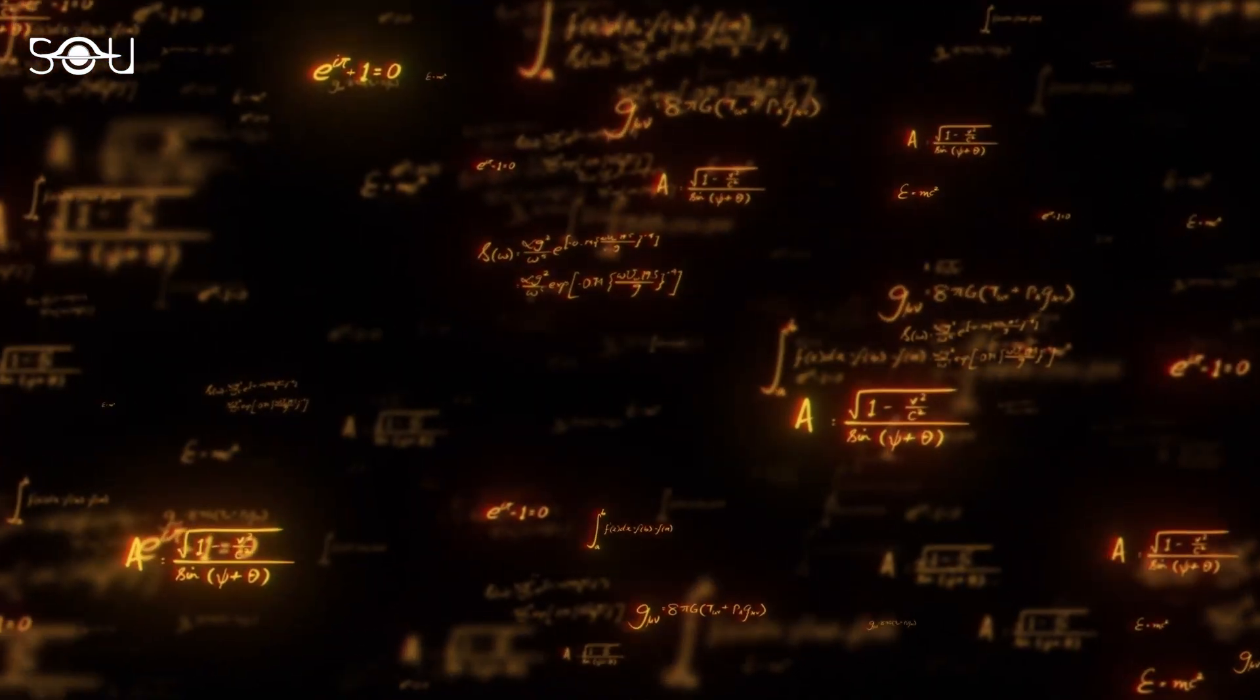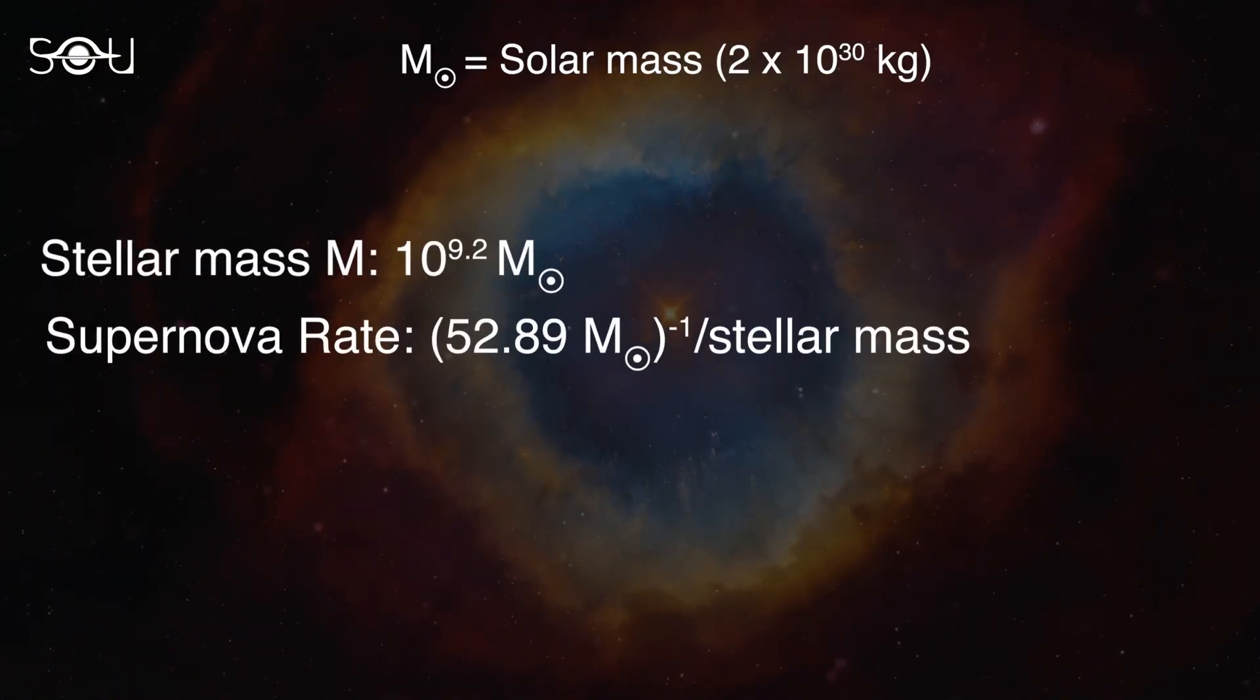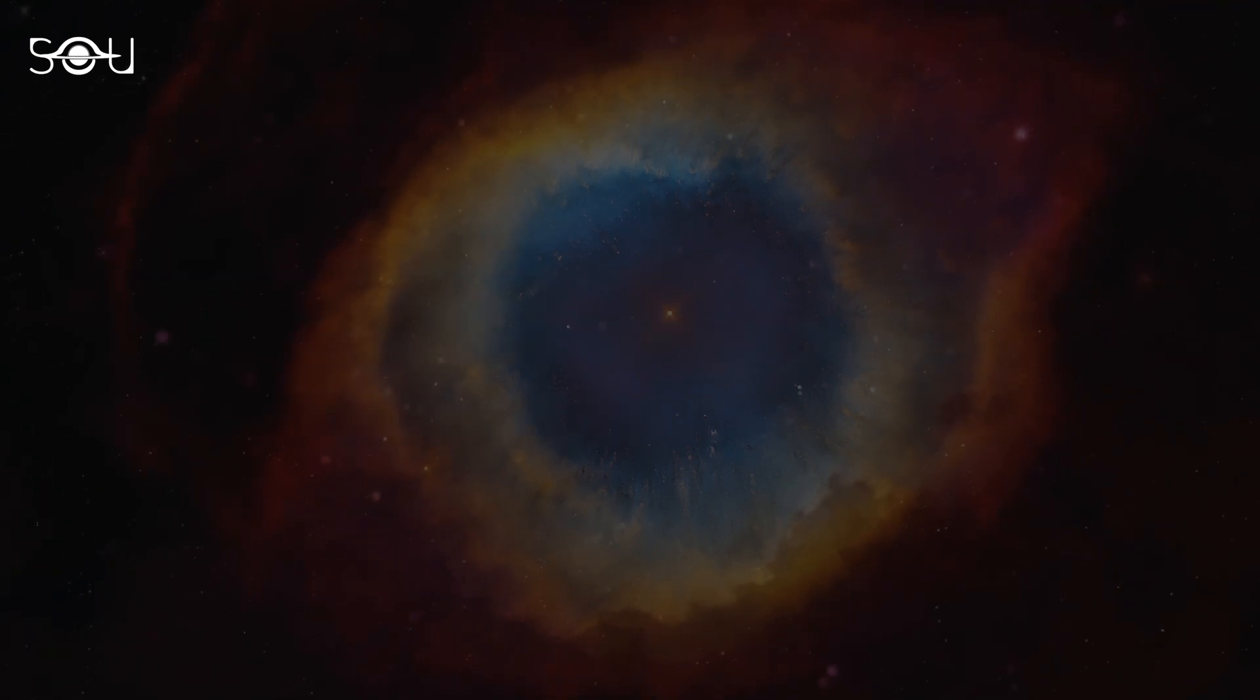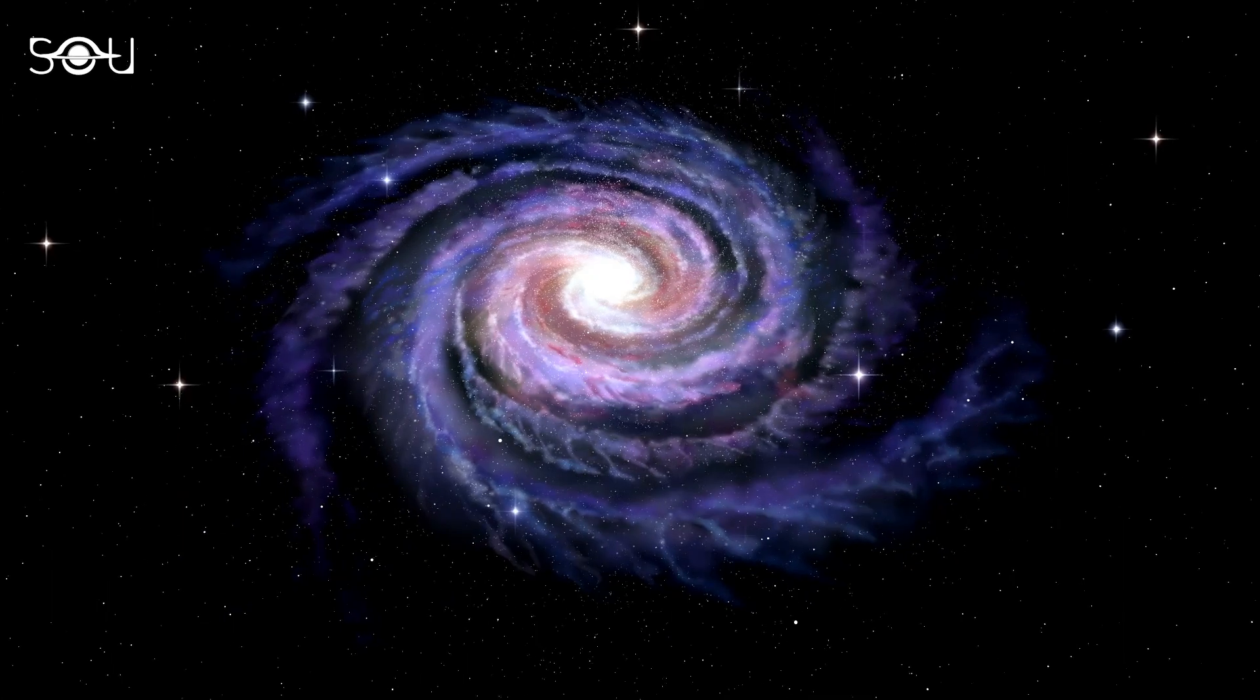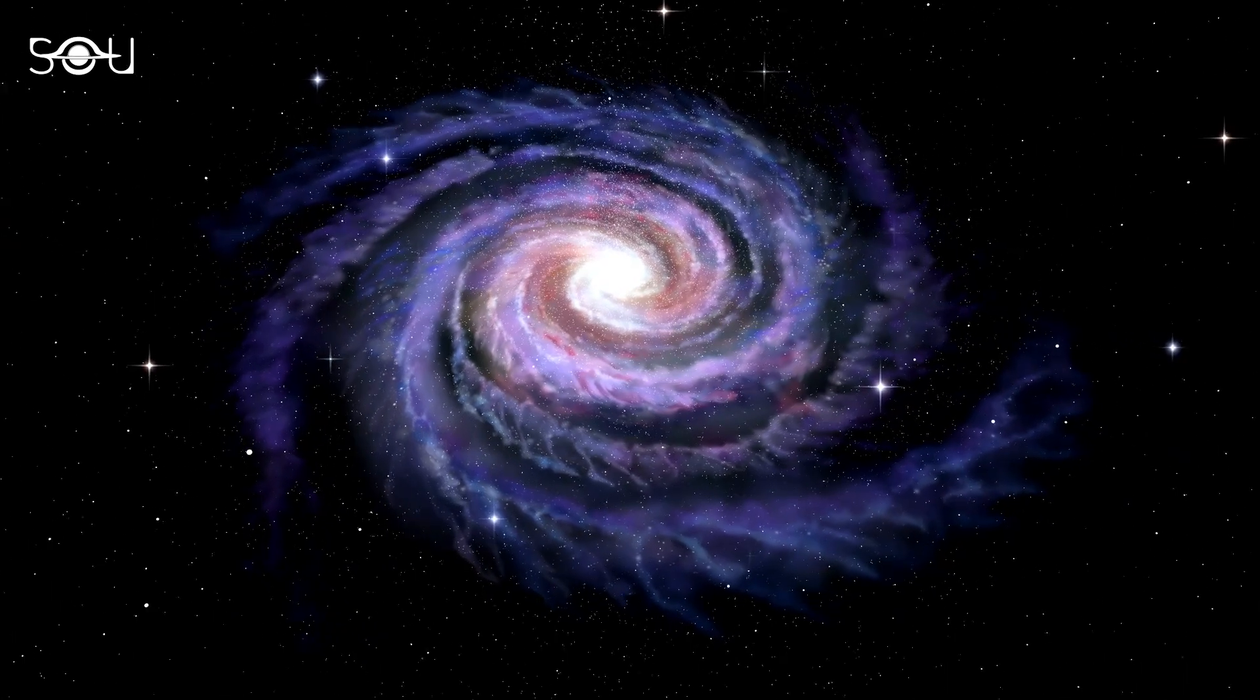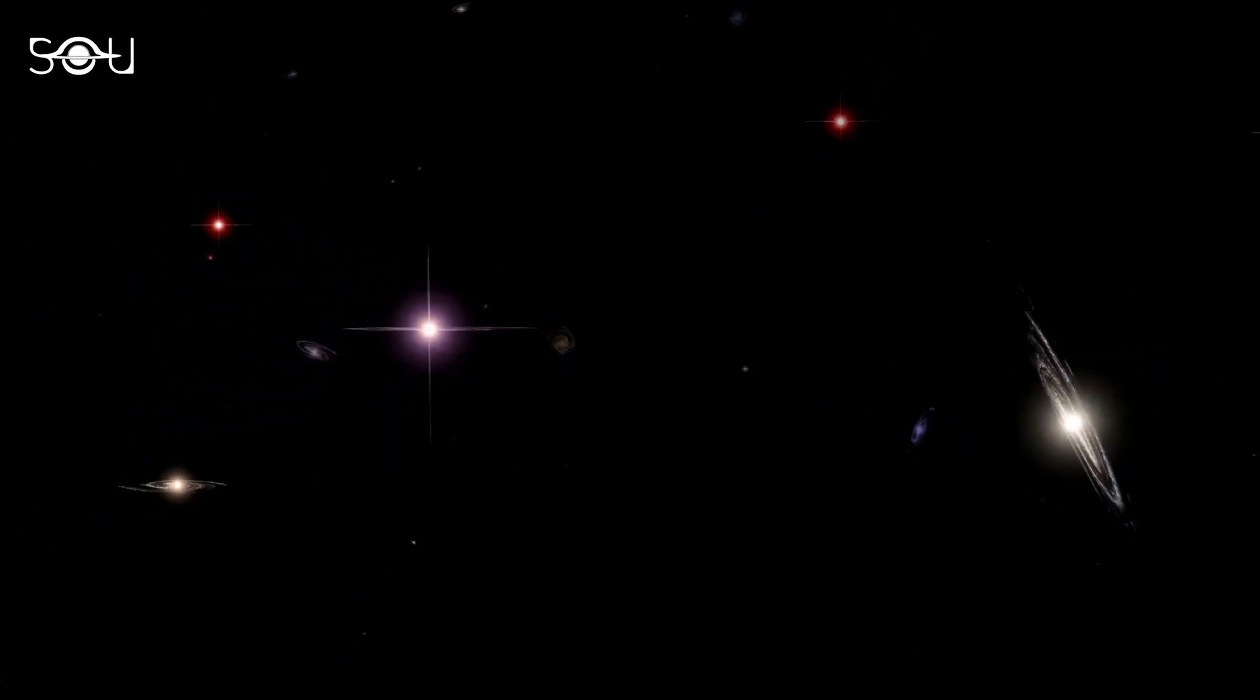The researchers even provided a simple calculation to illustrate the problem. By plugging in the values of the known stellar mass, supernova rate, and a Salpeter initial mass function, they concluded that these galaxies must be heavily obscured in contrast to the observations. So how do we resolve this apparent conflict? How can we explain the blue color of distant galaxies despite a huge dust content?